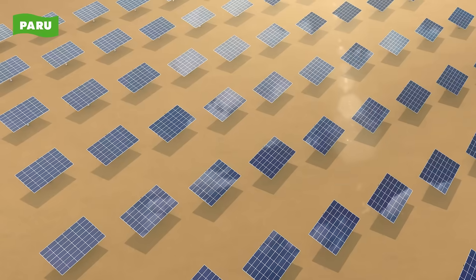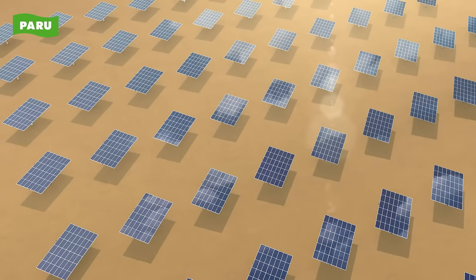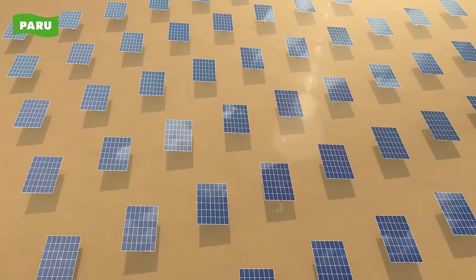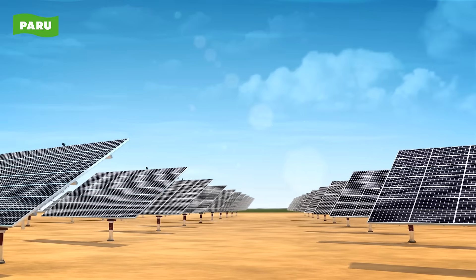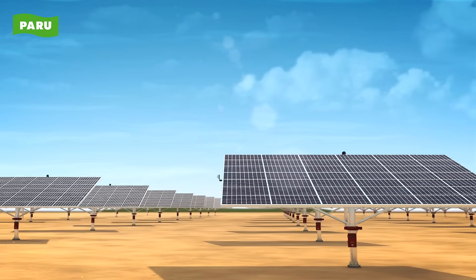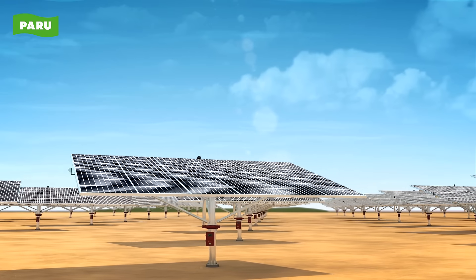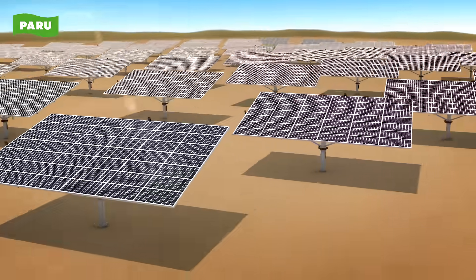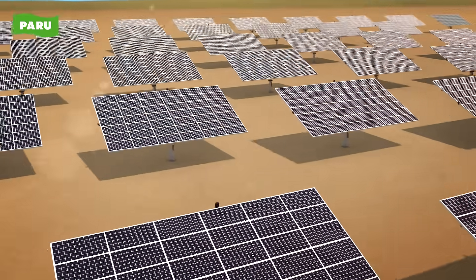A solar tracking system can guarantee maximum generator efficiency with its optimal angle of incidence tracking. The dual-axis tracker is a solar energy solution which can significantly increase solar power generation in response to changes in weather and the position of the Sun.